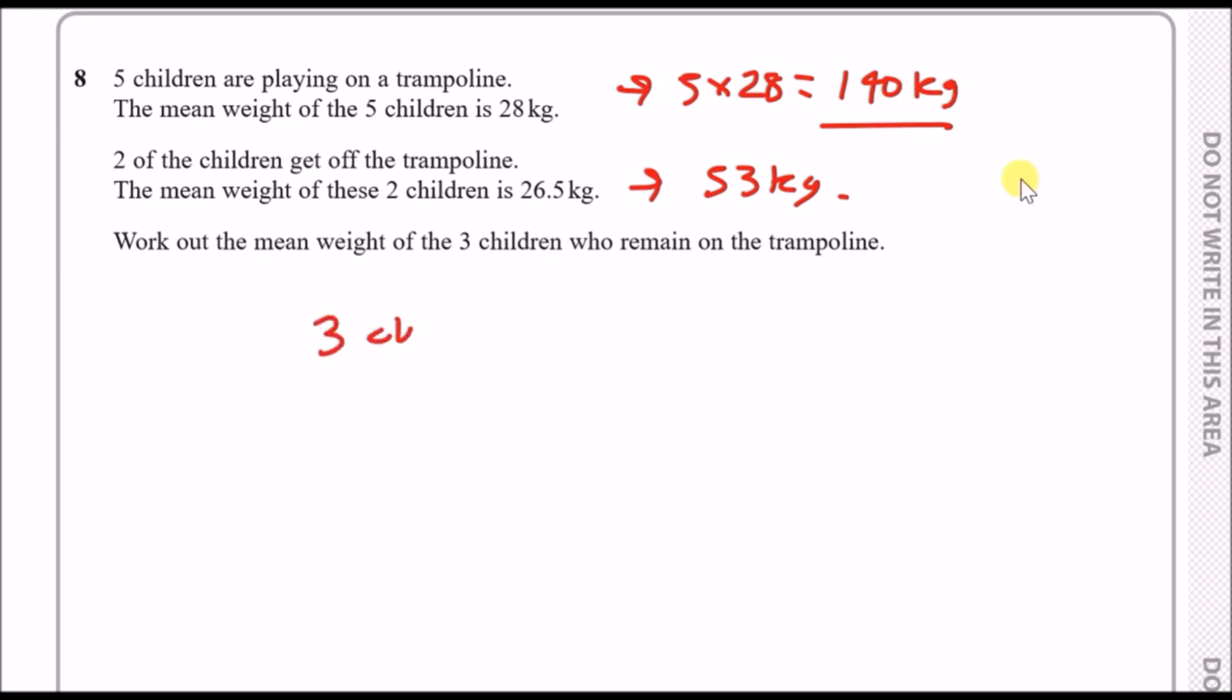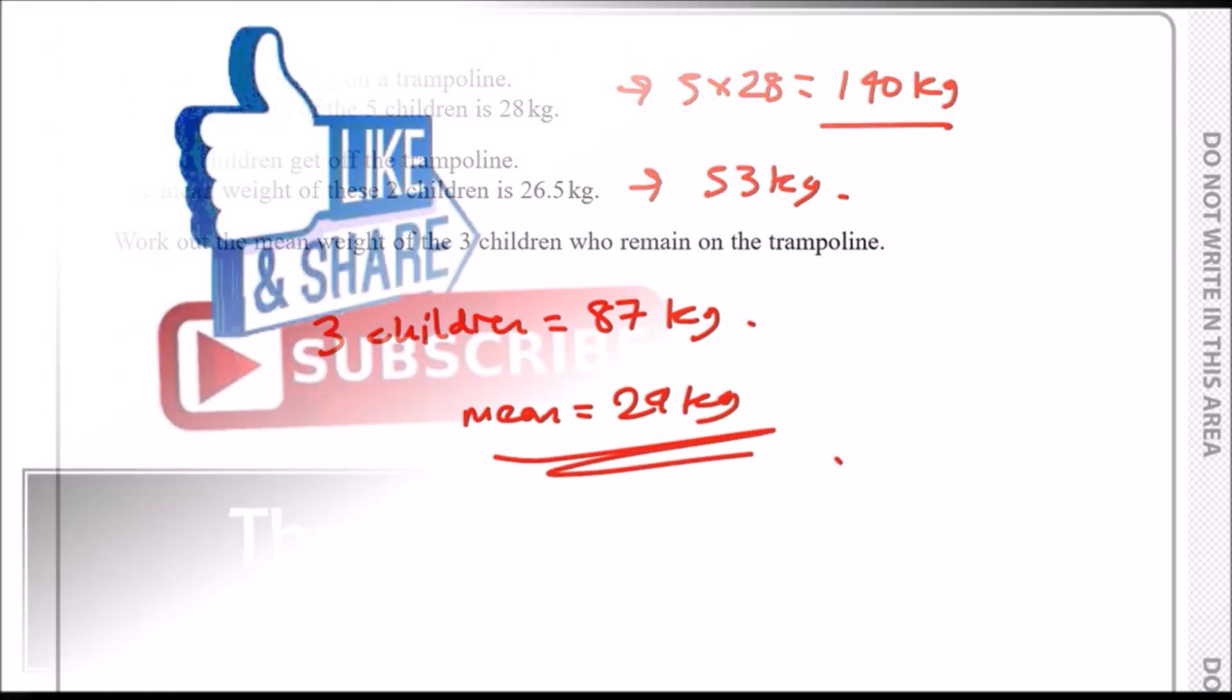In other words the difference between these two. If I have to subtract these two results we'll find out that the weight of the three children was actually the difference between 140 and 53 which is 87 kg. Now if I had to divide that by 3, it turns out that the mean weight of each of the three children that remain on trampoline was 29 kg. And that's it guys.